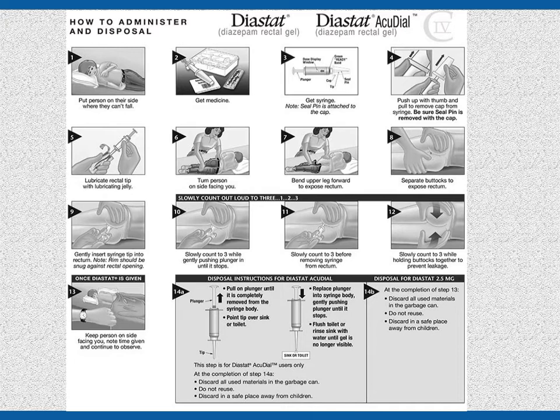Step 6: Turn the person on their side facing you. Step 7: Bend the upper leg forward to expose the anus. Step 8: Separate the buttocks so you can visualize the anus. Step 9: Gently insert the tip of the syringe into the anus. Note, the rim of the syringe should be snug against the external anal sphincter. Step 10: Gently push the plunger — it should take you a count of three to insert the medicine when counting slowly out loud. Step 11: Slowly count to three again before removing the syringe from the anus. Step 12: Hold the buttocks together to prevent leakage and slowly count to three again.